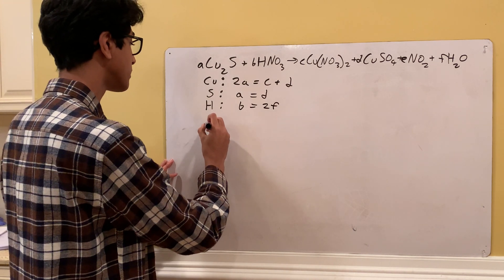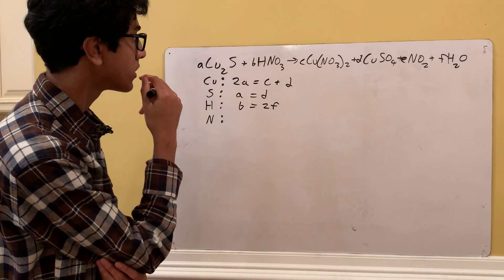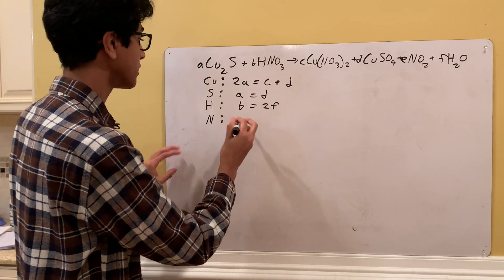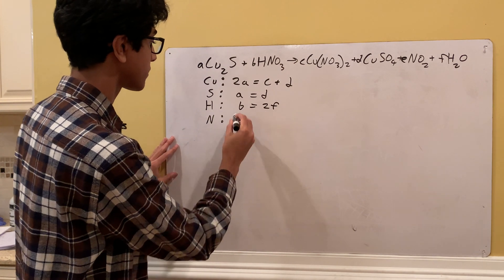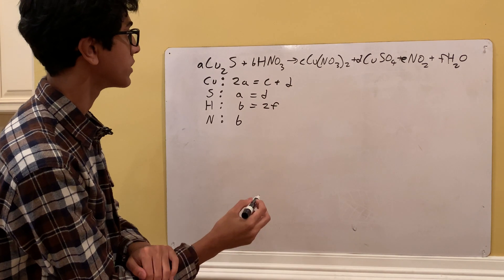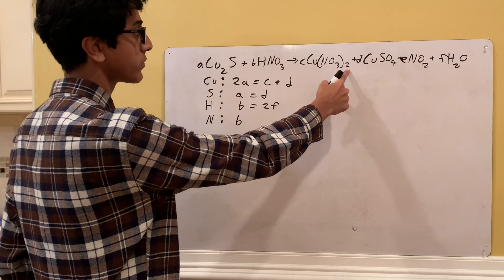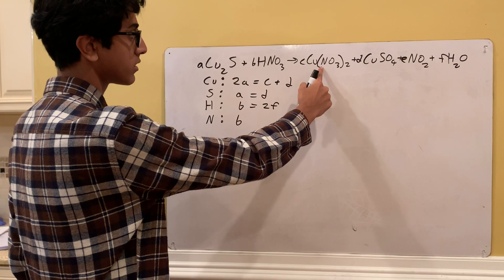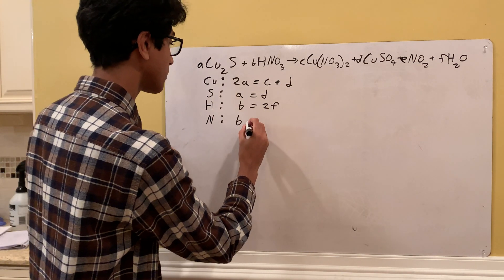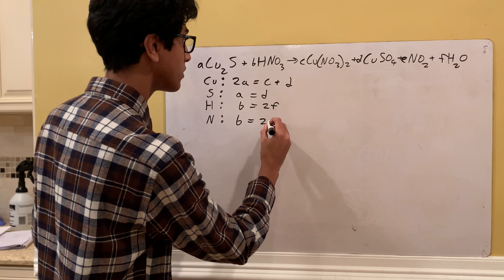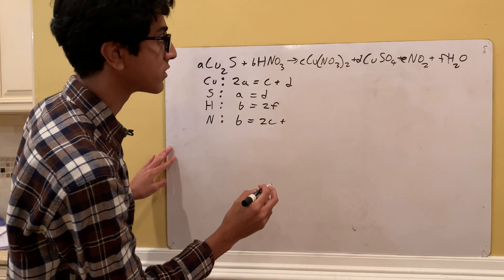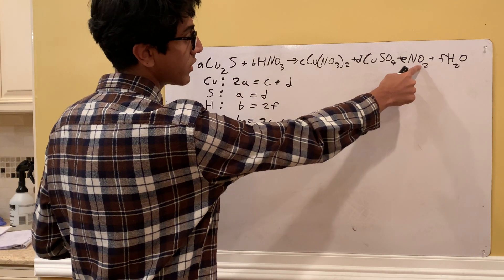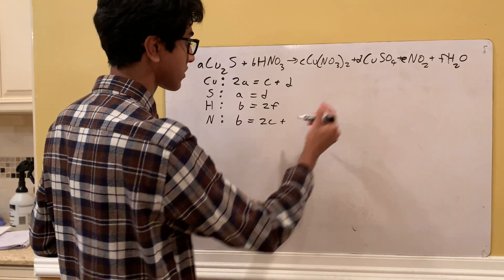For N: on the left side it's simply B, since there's no subscript and it appears once. On the right side it has a subscript of 2, so it's 2 times coefficient C, giving 2C. Then N appears again with coefficient E. So the equation is B = 2C + E.